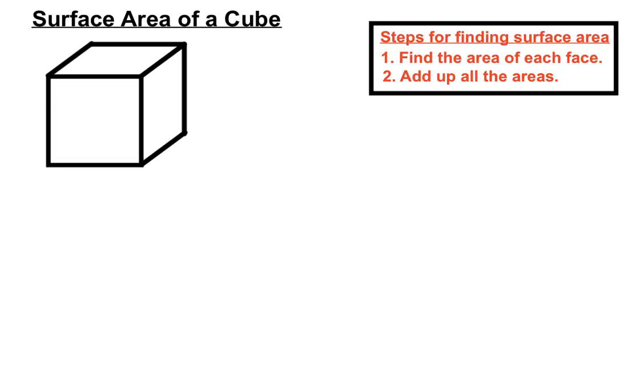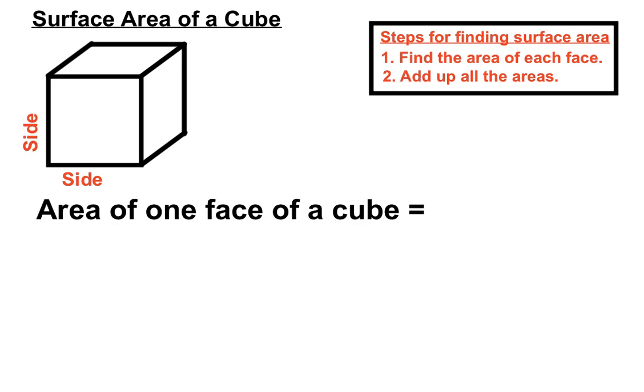So for a cube, here's a cube. It has equal side lengths on all of the faces. All the edges will be the same size length, and we have a side and another side over there.